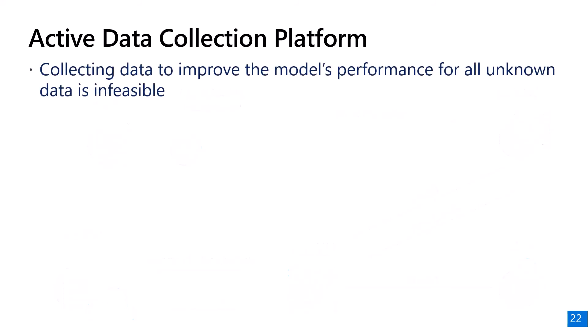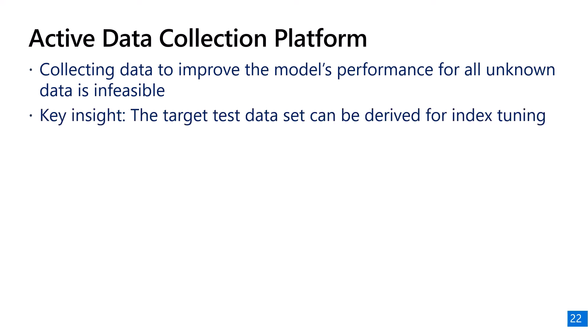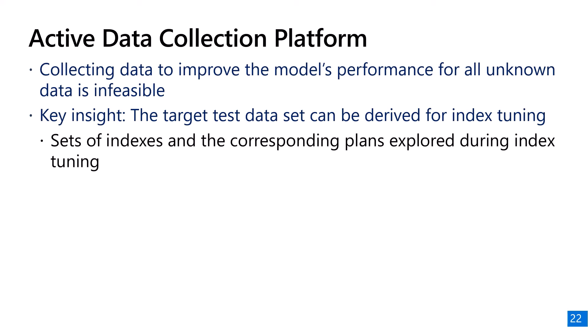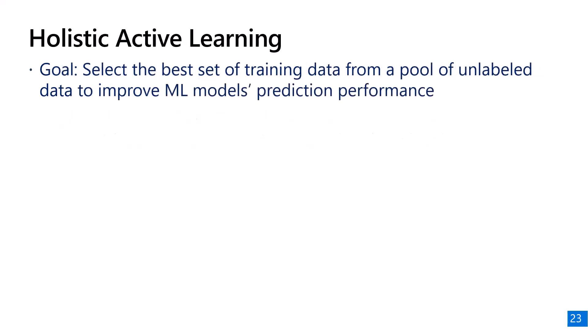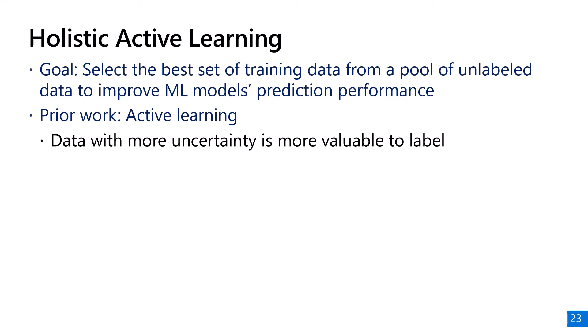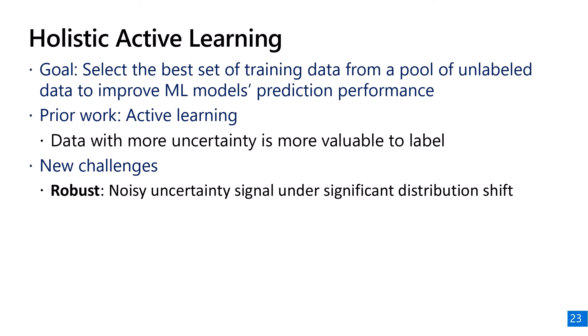We will never be able to collect enough data to improve the model for all unknown distributions, and we don't have to. Our key insight is that the data we want to predict can be derived from the index tuning process — we are only interested in predicting query regressions for the indices and query plans explored during the search of index combinations. The goal is to select the best training data from a pool of unlabeled test data, a problem studied in the context of active learning. However, we face new challenges: since we focus on adapting to new distributions, signals from the existing model are noisy and not reliable.